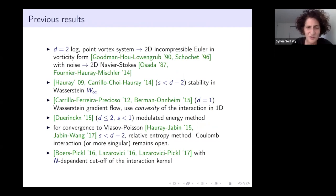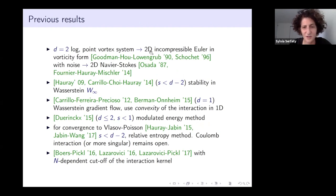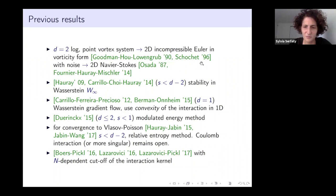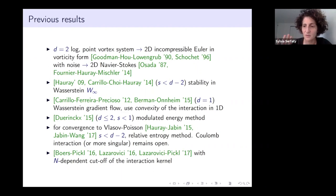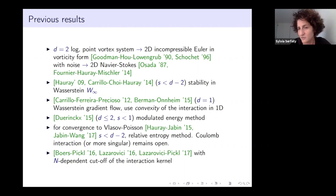What was known on this type of problem? The point-vortex system is a particular instance: taking the 2D log interaction case, it's known to converge to 2D incompressible Euler in vorticity form—famous results of Goodman, Howe, Lowenberg, Schochet. If you add noise, you converge instead to 2D Navier-Stokes in vorticity form. This works because the log in 2D is barely singular, but the proof does not extend to 3D.